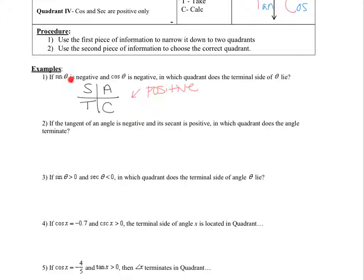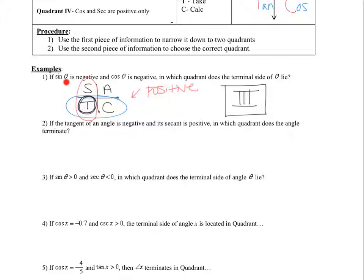So which two quadrants is sine negative? It must be the other two. Now cosine is also negative. The chart shows cosine is positive in A and C, so cosine is negative in the remaining two quadrants. Where these two sets of quadrants overlap is quadrant three — so the answer is quadrant three. In order to have sine negative and cosine negative, we have to be in quadrant three.